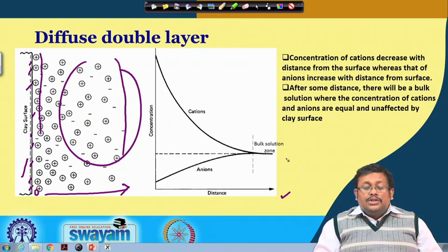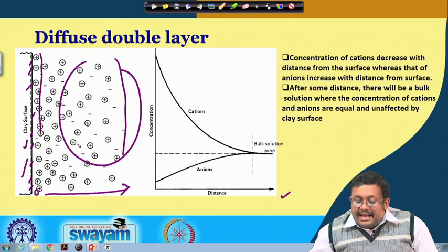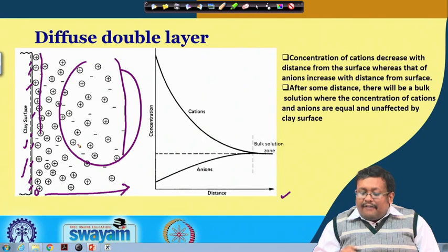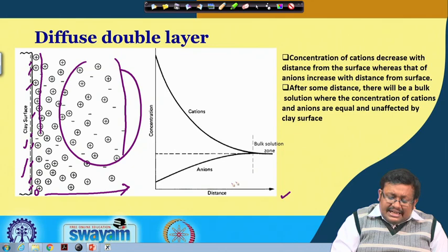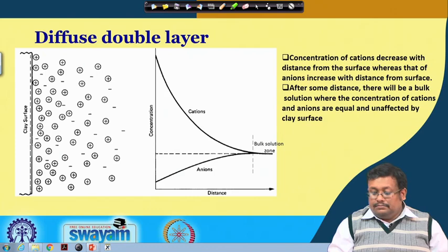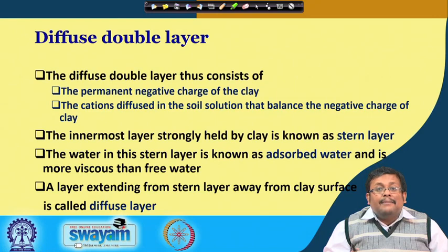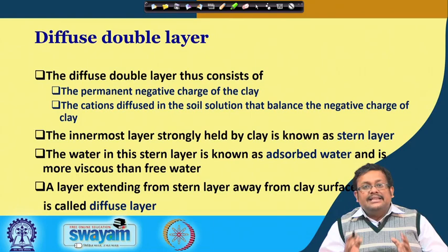As we move further from the clay surface, anion concentration increases, and after a certain distance both cations and anions are present in an equilibrium bulk solution, unaffected by the surface. The diffuse double layer consists of the first clay surface layer followed by a second layer of diffusing ions. The diffuse double layer thus consists of the permanent negative charge of the clay and the cations diffused in the soil solution that balance the negative charge.